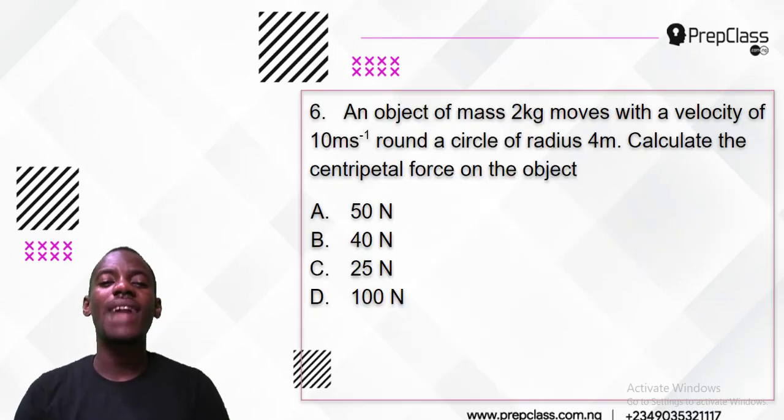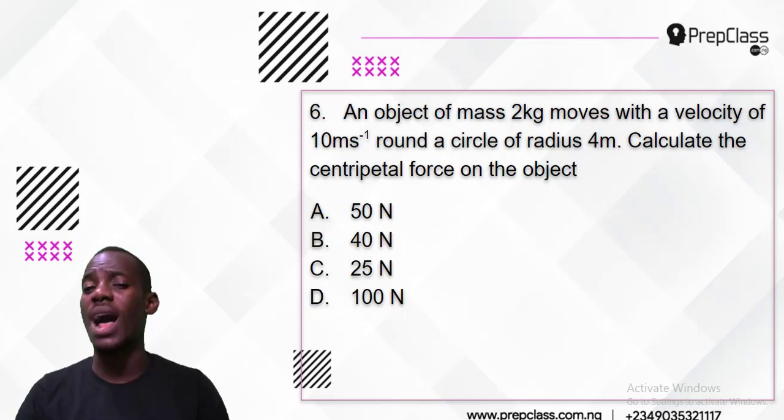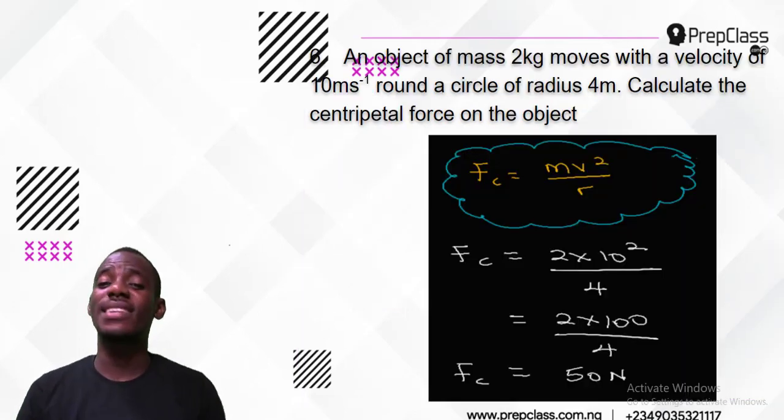Let's get to question number 6. An object of mass 2 kilograms moves with a velocity of 10 meters per second around a circle of radius 4 meters. Calculate the centripetal force on the object. What formula will come to mind? Do you remember any formula for centripetal force? It's actually very simple: F = mv²/r, where m is mass, v is velocity, and r is radius.